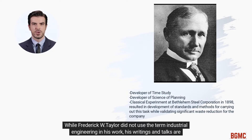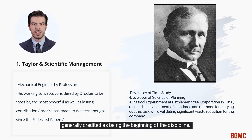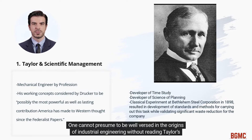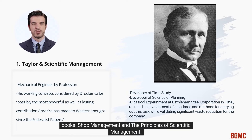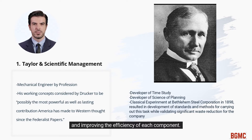While Frederick Taylor did not use the term industrial engineering in his work, his writings and talks are generally credited as being the beginning of the discipline. One cannot presume to be well versed in the origins of industrial engineering without reading Taylor's books, Shop Management and The Principles of Scientific Management. The core of Taylor's system consisted of breaking down the production process into its component parts and improving the efficiency of each component.